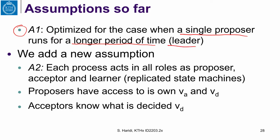Now we are going to add new assumptions. The assumption that we are going to add is each process will act in all roles as proposer, acceptor and learner and this is what we call a replicated state machine. So in the replicated state machine, each replica will play the role of a proposer, acceptor and learner and of course they will elect one among themselves as a leader. So now what do we have? The proposer has access to its own accepted sequence and its own decided sequence.